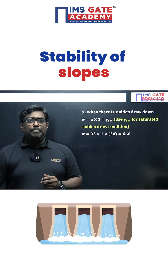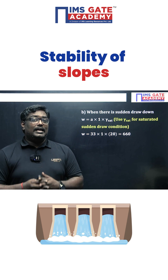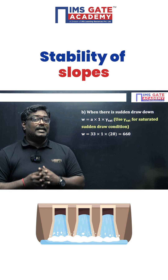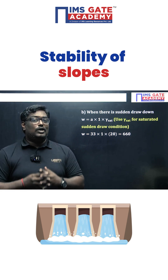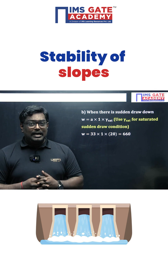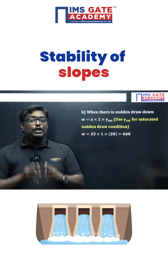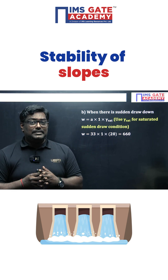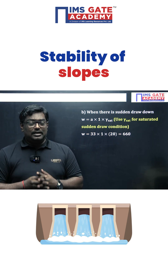In condition B, when the canal gets emptied suddenly — the sudden drawdown condition — the weight is calculated using gamma sat, the saturated condition.